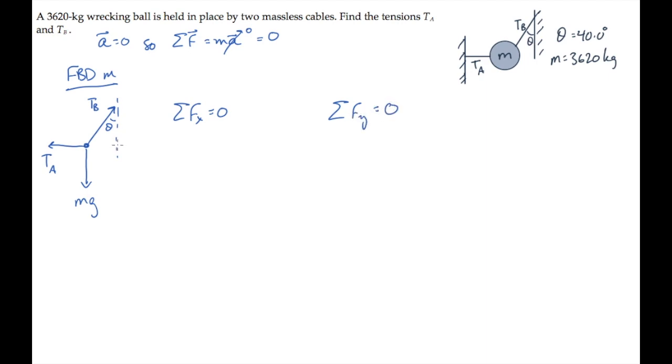In the vertical direction, tension b has the component Tb cosine of theta, so that when we add the forces we get Tb cosine theta minus the weight equaling zero. We can solve this for tension b, it equals the weight over cosine of theta.